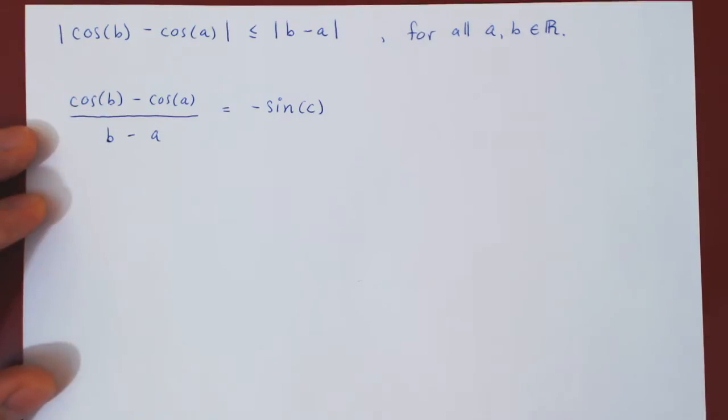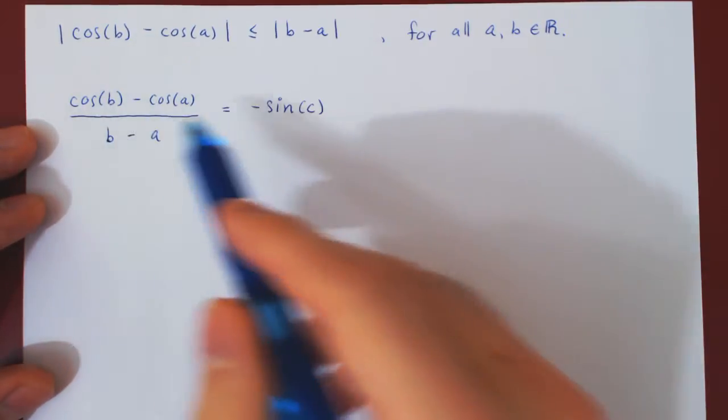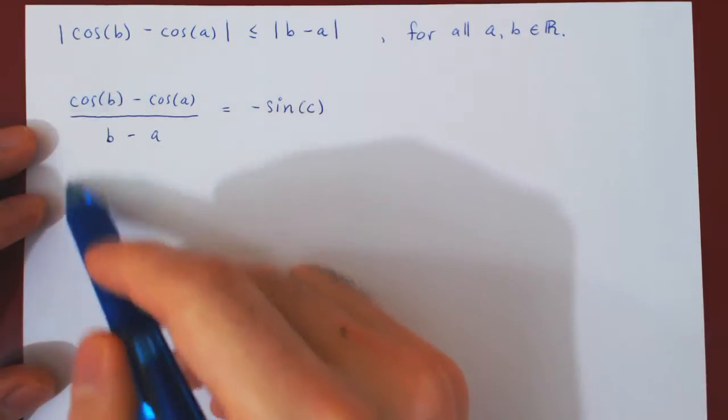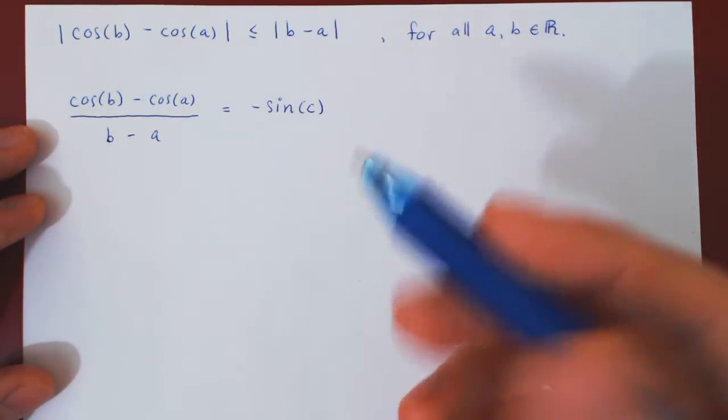And now, we can do two simple things. The first, as both sides are equal, the absolute value of both sides must also be equal.